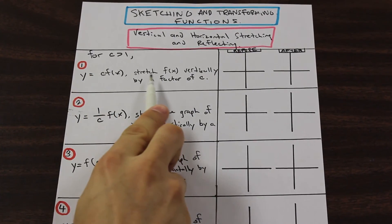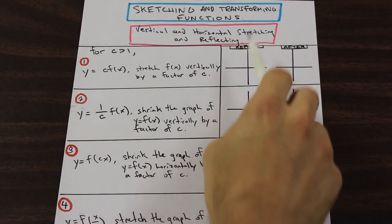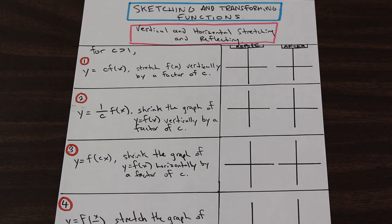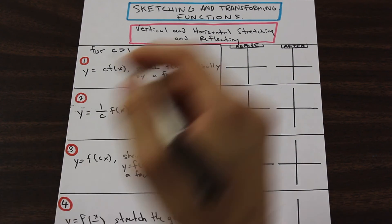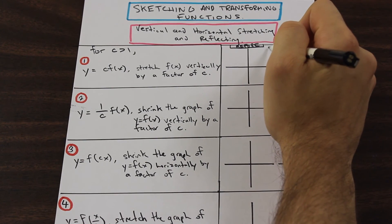Like right here, we're going to take f of x, the graph of f of x, and we're going to stretch it vertically by a factor of c. So what does that mean, vertically? Well, let me just show you. So for example.